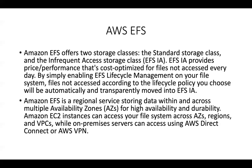Amazon EFS is a regional service, storing data within and across multiple availability zones for high durability and availability within that region. EC2 instances can access your file system across availability zones, regions, and VPCs — even VPCs connected via VPC peering. For on-premise infrastructure, you should use a Direct Connect connection (a dedicated leased line through a Direct Connect partner) or a site-to-site VPN connection to ensure network reachability between your on-premise infrastructure and the AWS VPC where EFS resides.